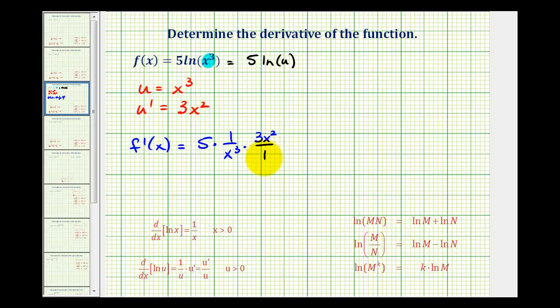So I'll write 3x² over 1. Now let's simplify this. Notice two factors of x simplify out. This simplifies to 1, this simplifies to x to the first. This 5 would also be over 1, so our derivative function equals 15 divided by x.